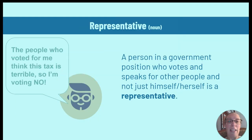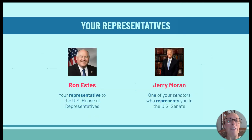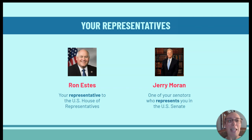A representative is a person who might go to an assembly — a person in a government position who votes and speaks for other people, not just for himself or herself. Your representatives in Congress right now: in the US House of Representatives, Ron Estes is your representative, and Jerry Moran is your senator. While senators are not called representatives, they still are representing you and the people of our district.